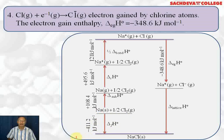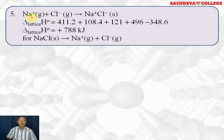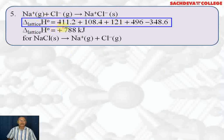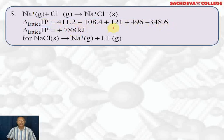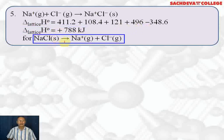The energy of formation of sodium chloride from sodium solid plus half Cl₂ gas is minus 411.2 kilojoules per mole — the formation of NaCl solid is an exothermic process. The lattice energy can be calculated as: 411.2 + 108.4 + 121 + 496 − 348.6, involving all types of energies, giving delta H lattice equal to 788 kilojoules per mole for NaCl solid.